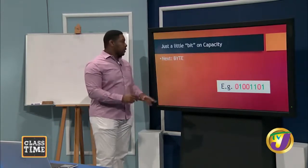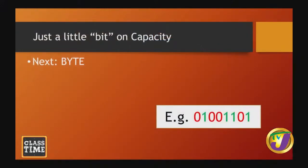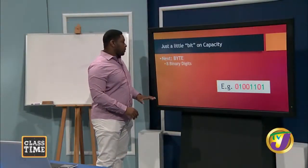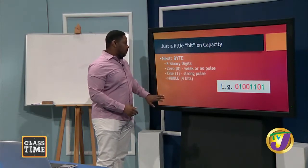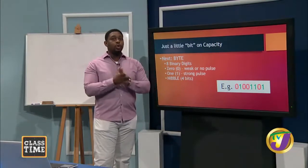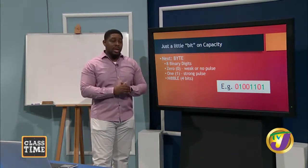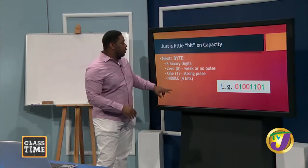A byte is eight binary digits — any number of configurations. Those interested can check out ASCII codes, which tell you the encoding for each letter and special character. There is also a smaller measurement called a nibble, which uses just four bits. Hexadecimal uses four binary digits to code numbers — you'll also hear this term when working with internet colors on a web page.